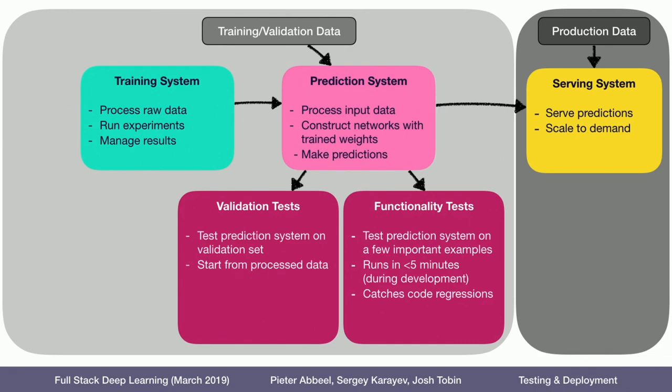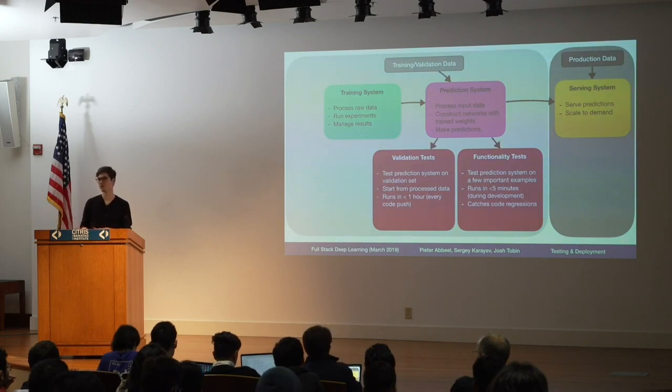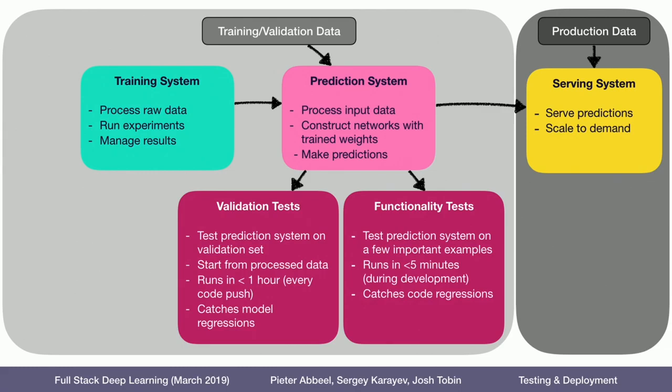Validation tests start from processed data — not necessarily raw data — and should run in less than an hour. Every time we push code to our continuous integration system, we run the validation tests to make sure accuracy is not decreasing and we're not caught off guard. The idea is to catch model regressions: if I introduce a new model type or update the weights, the CI system will alert me if there's a regression in performance.